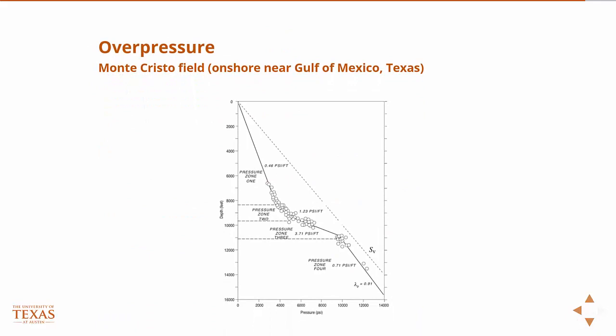This is a pressure log from Monte Cristo field, which is onshore in Texas near the Gulf of Mexico. It's pretty characteristic of what you see in almost all Gulf of Mexico type formations. What you'll see is an initially hydrostatic region — I'm drawing this line to roughly represent the hydrostatic portion. The slope is 0.46 PSI per foot, which is very near what we define as hydrostatic.